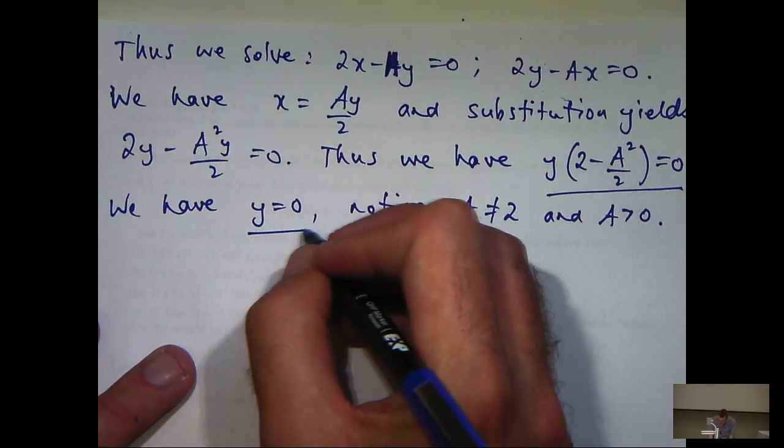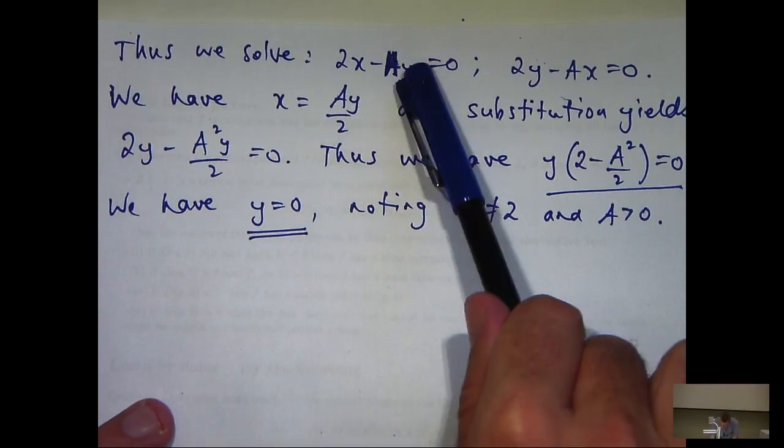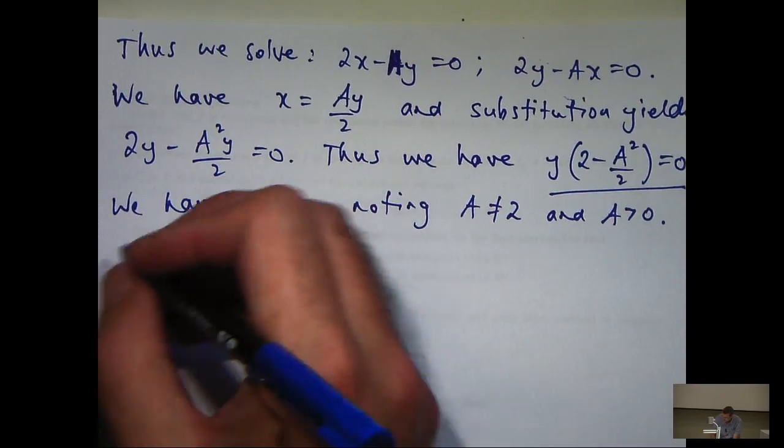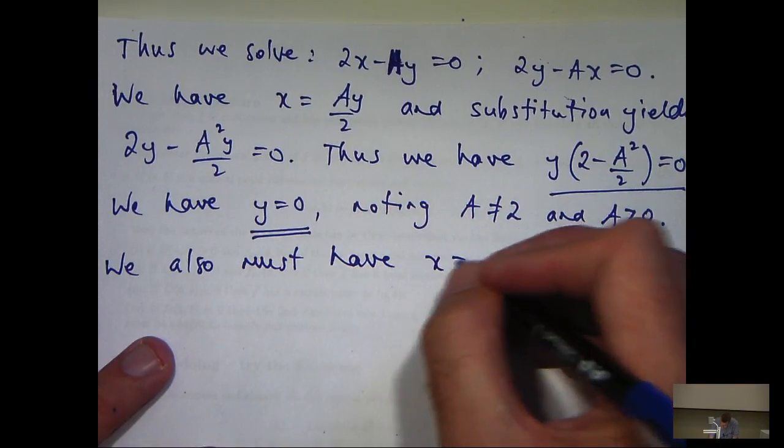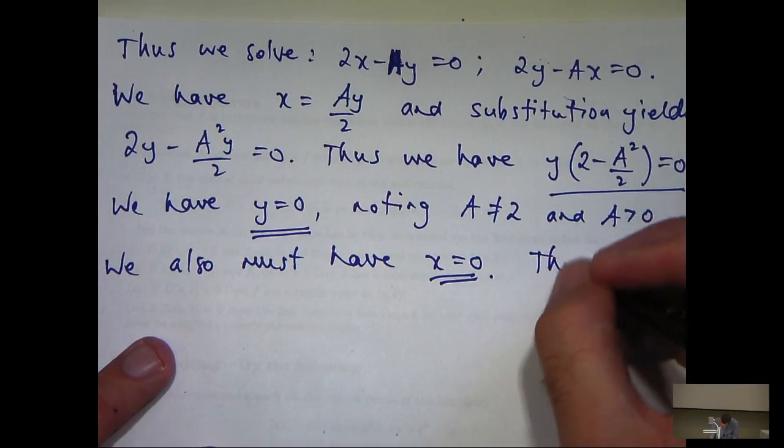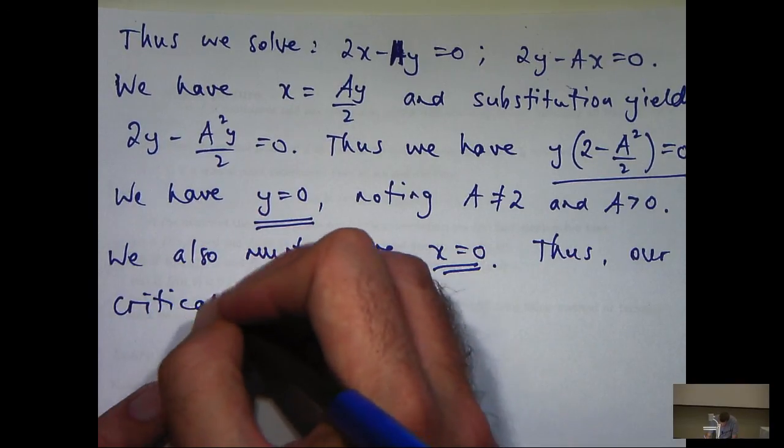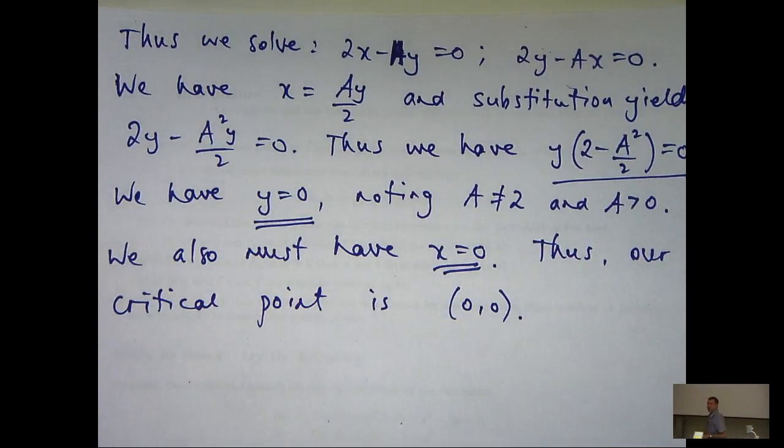Okay, so this is the y component of our critical point of f. Let's calculate the x component. Well, we can go back, substitute in for y and come up with x equals 0. So, thus, our critical point is (0, 0). So, we've answered the first part of the question there. We've determined the critical points. There's one of them and it occurs at (0, 0).